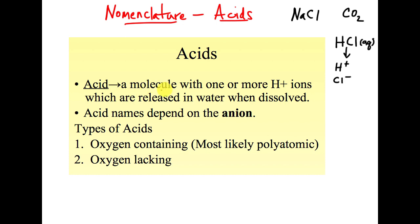Acids—what are they? Essentially, it's a molecule that has one or more H+ ions that are going to be released when it's dissolved in water. Because it has this hydrogen ion and it's going to make it very similar to ionic compounds, we're going to have to balance charges. For acids, we have to balance charges. The acid name is always going to depend on the anion because your cation is always hydrogen.